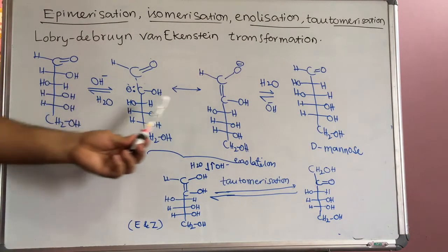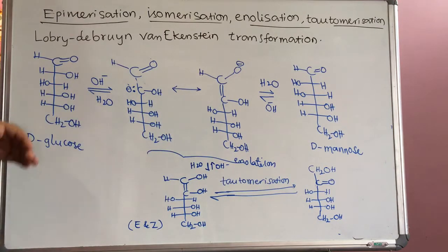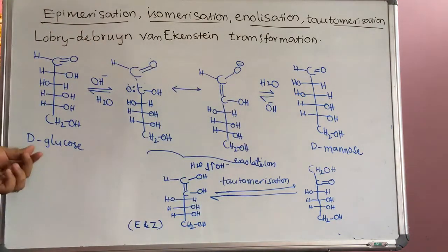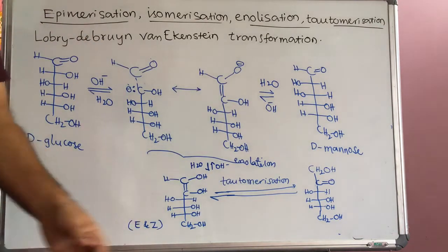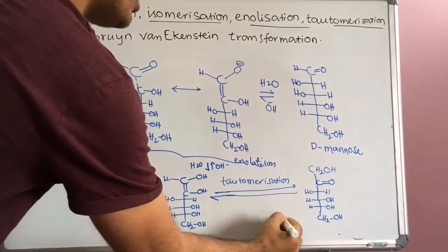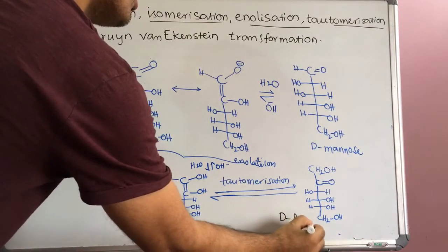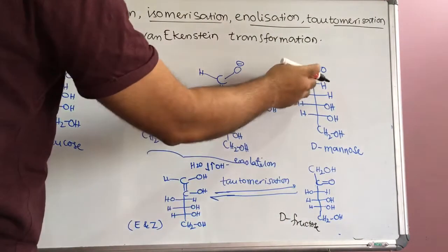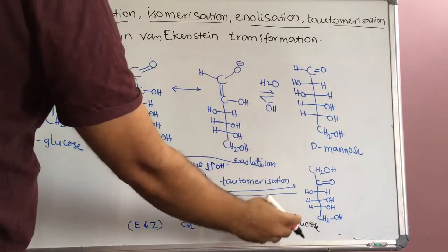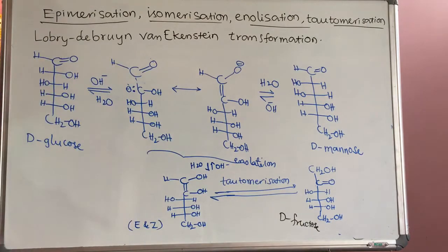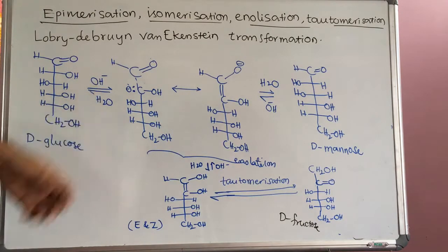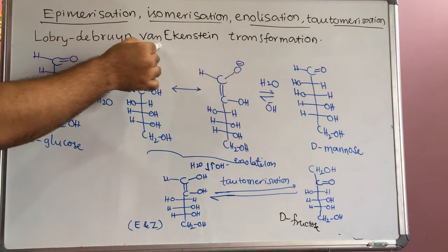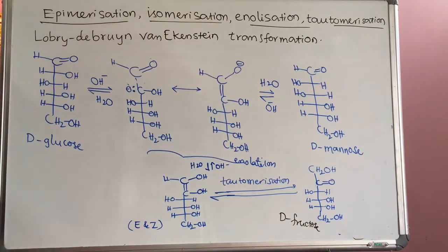This transformation from one form to another — for example, D-glucose to D-mannose, D-glucose to D-fructose, or D-fructose to D-glucose, D-fructose to D-mannose, D-mannose to D-fructose. So these are interconvertible in basic medium. This is called the Lobry de Bruyn–Van Ekenstein transformation.